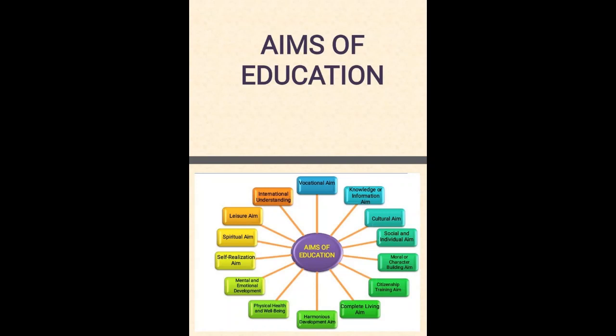Then I will discuss about the aims of education. Number 1: Utilitarian gain. Number 2: Education for vocation. Number 3: Education for knowledge. Number 4: Education for culture. Number 5: Education for character. Number 6: Education for leisure. Number 7: Education for spiritualism.